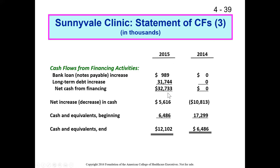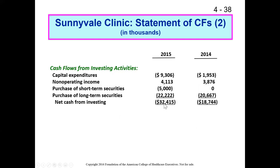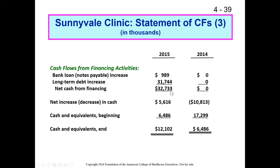We then take the net cash from operations, the net cash from investing, and the net cash from financing, and add the three together to get the net increase in cash coming into or going out of the organization. Once we have that net increase or decrease, we go back to the balance sheet and get the cash balance from the end of the prior year. The cash balance at the end of 2014 is the cash balance at the beginning of 2015, and adding the change gives us the ending cash balance.